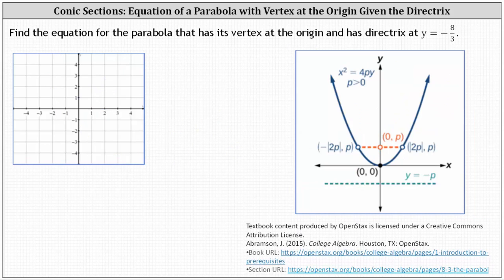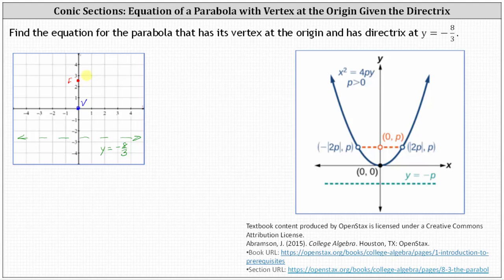For our last example, the vertex is at the origin, and now the directrix is the horizontal line y equals negative 8 thirds. Negative 8 thirds is approximately negative 2.67, so the directrix would be approximately here. Because the directrix is 8 thirds units below the vertex, we know the focus must be 8 thirds units above the vertex approximately here, where the ordered pair is zero comma 8 thirds. We can see the parabola is going to open up and look something like this. Because the directrix is parallel to the x-axis and the parabola opens along the y-axis, the equation is in the form of x squared equals 4py.